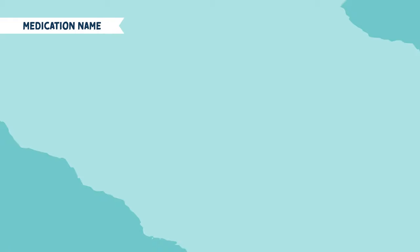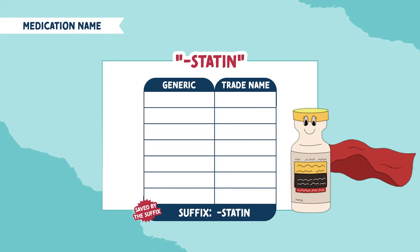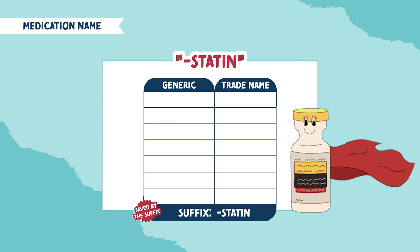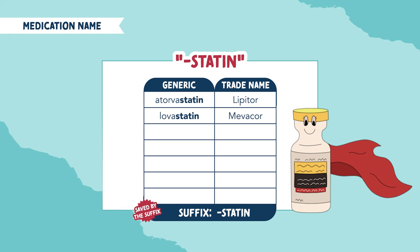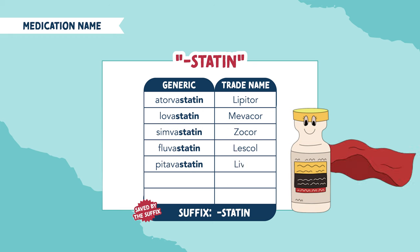The medication is very easy to recognize because we are saved by the suffix. The suffix for statins is -statin, which makes the medication names super easy to recognize. Some examples are atorvastatin, brand name Lipitor; lovastatin, brand name Mevacor; simvastatin, brand name Zocor — and the list goes on.